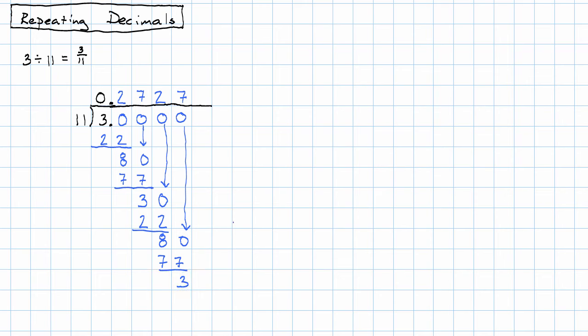What's happening here? We keep getting the same pattern over and over again. Every time we have a remainder of 3, that becomes 11 going into 30 and it gives us a 2. Every time we have a remainder of 8, that becomes 11 going into 80 and it gives us a 7.